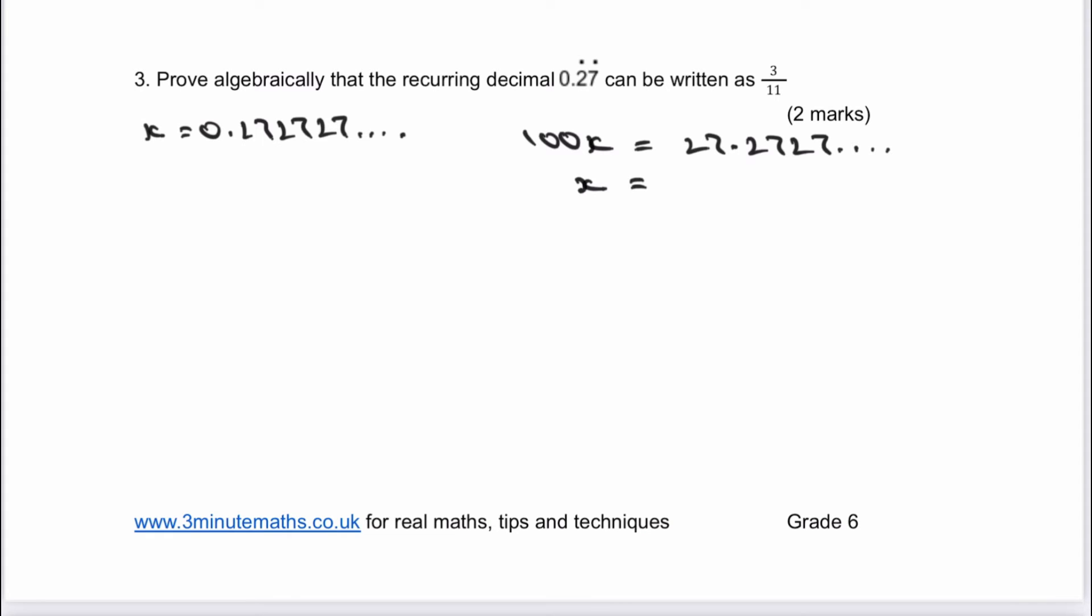Therefore, if I take away the value of x, which is 0.2727, then it means that effectively I lose all of the recurring decimal bit of it. So therefore, I get 99x equals 27.